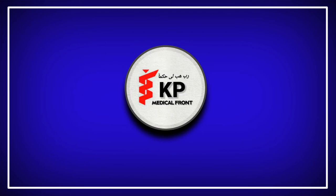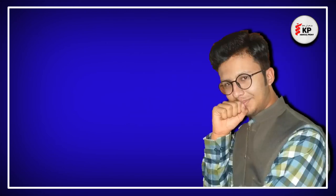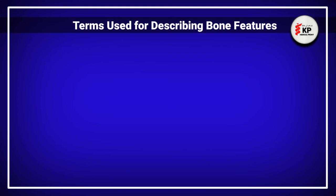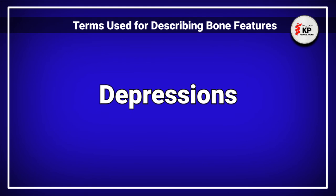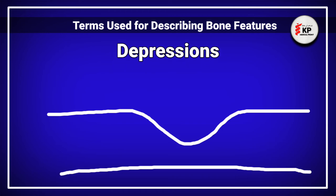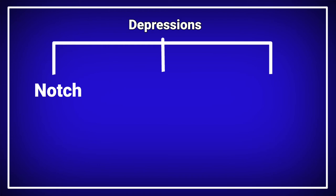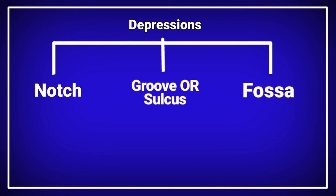Welcome to KP Medical Friend official YouTube channel. I am the admin Mawazam Saith. Today we will discuss different terms used for describing the bone features — the depressions. A point located in a depression is at a lower level from the normal surface of the bone. There are three different kinds of depressions: the notch, the groove (also known as the sulcus), and the fossa. Let's discuss the 3D animation of these depressions.